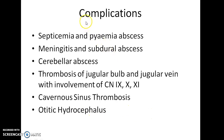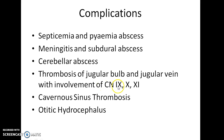The complications of lateral sinus thrombophlebitis include septicemia and pyemia abscess, meningitis and subdural abscess, cerebellar abscess, thrombosis of the jugular bulb and jugular vein with involvement of cranial nerves 9, 10, and 11, cavernous sinus thrombosis, and otitic hydrocephalus.